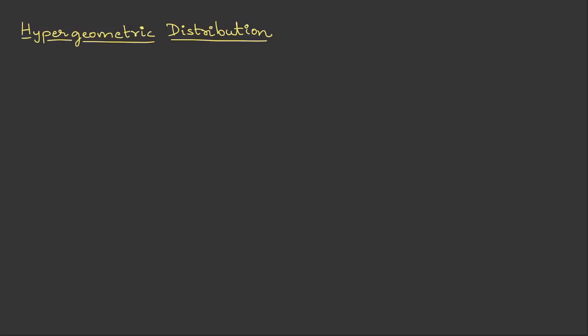If the question has a set of items with two different classifications and if you choose some items, this kind of question if it comes in the exam, you will be using hypergeometric distribution. It is a binomial distribution without replacement.